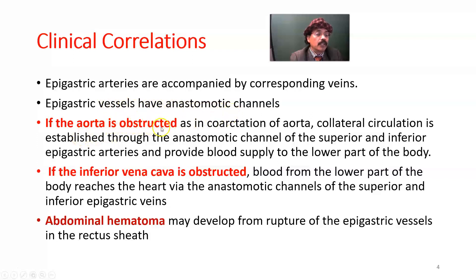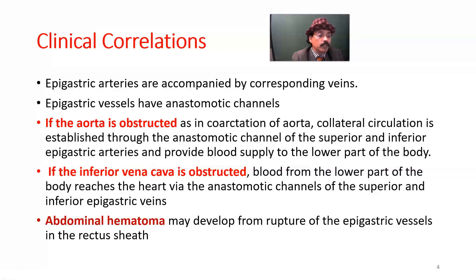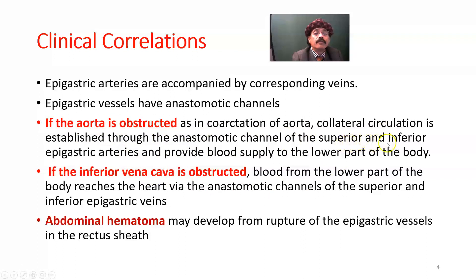If the aorta is obstructed — for example in coarctation of the aorta, which is a narrowing of the aorta just beyond the arch, a very common congenital anomaly — collateral circulation is established through the anastomotic channel of the superior and inferior epigastric arteries to provide blood supply to the lower part of the body.